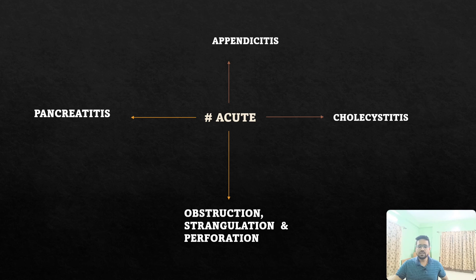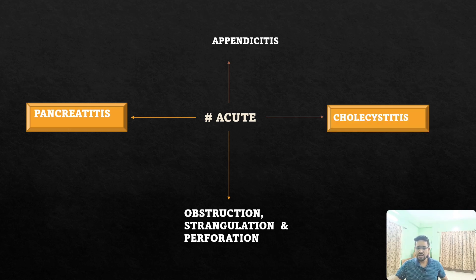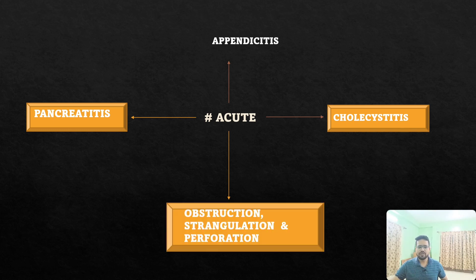The third topic is acute conditions in surgery. Acute pancreatitis is most important — more than 10 to 15 questions come from it in both medicine and surgery — read every detail from risk factors to management. Also read acute appendicitis, acute cholecystitis with all criteria and management for mild, moderate, and severe cases, and obstruction, strangulation, and perforation of the bowel and hernia.